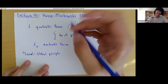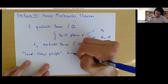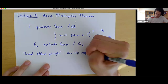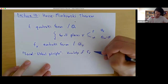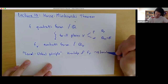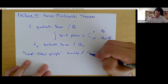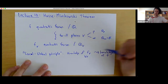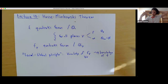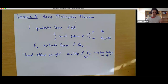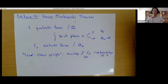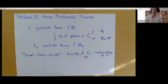The main theme of Hasse-Minkowski is a theme called the local-global principle, which is not a general principle that's always valid, but it is valid in some examples, including in the case of quadratic forms. Knowledge of F_V for all V gives you knowledge of F. So if you know how your quadratic form behaves locally — at every completion at every prime and at infinity — then you should know a lot about your quadratic form F.